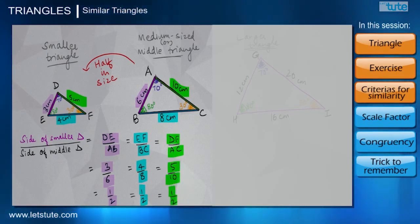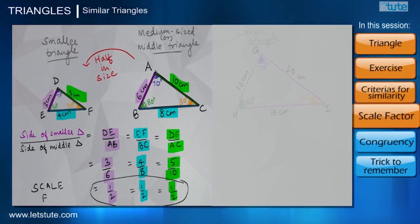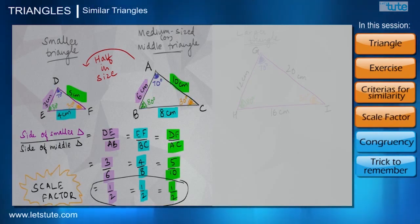So we can see whenever we are taking the ratio of the sides of both of these triangles, we are getting the answer 1 upon 2. So this particular number, 1 upon 2, will be called the scale factor. And please note that this scale factor is actually something really important when we are constructing similar triangles in geometry.